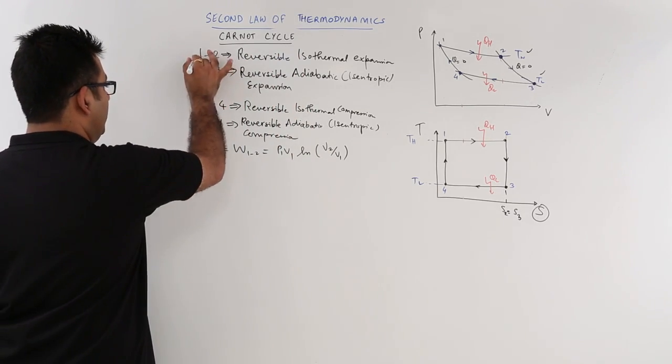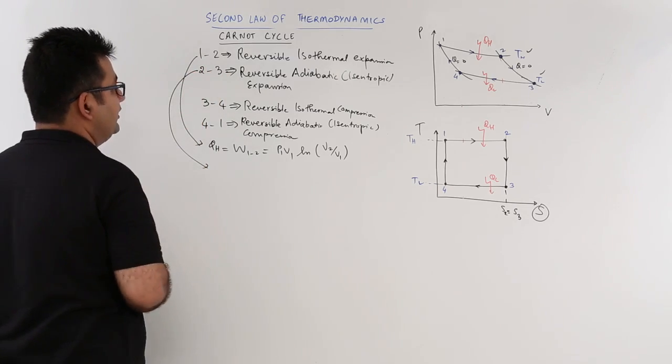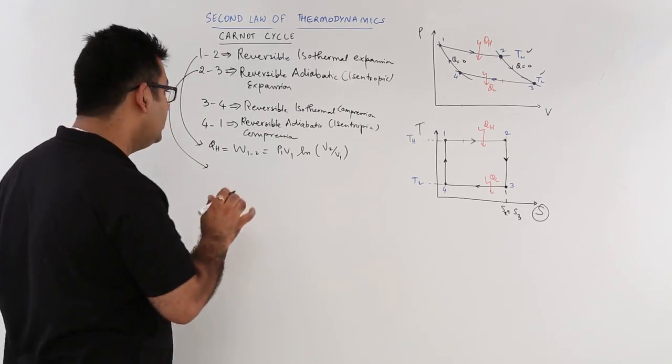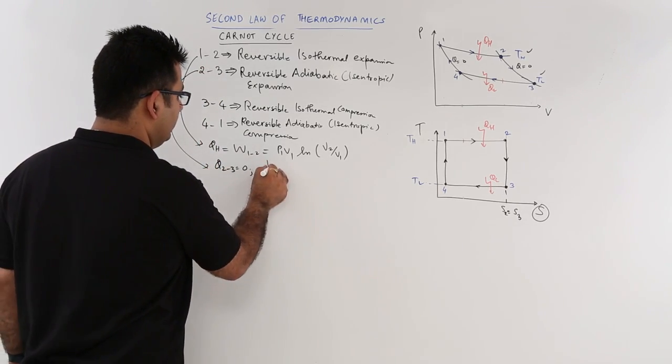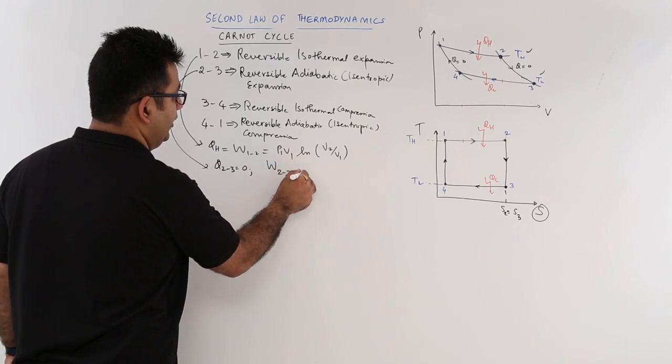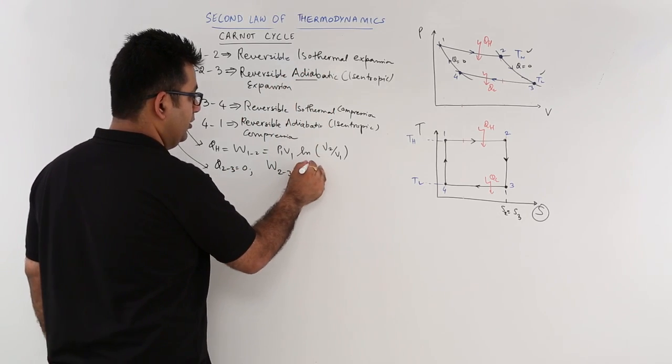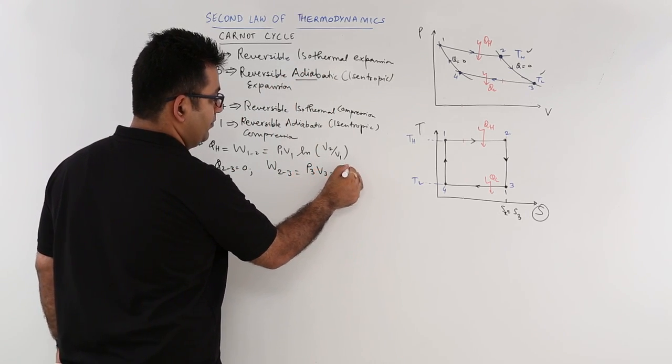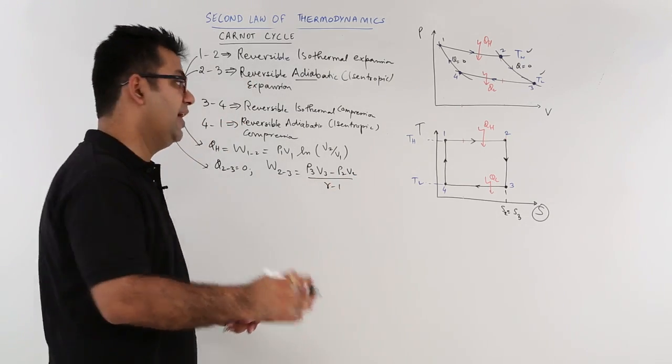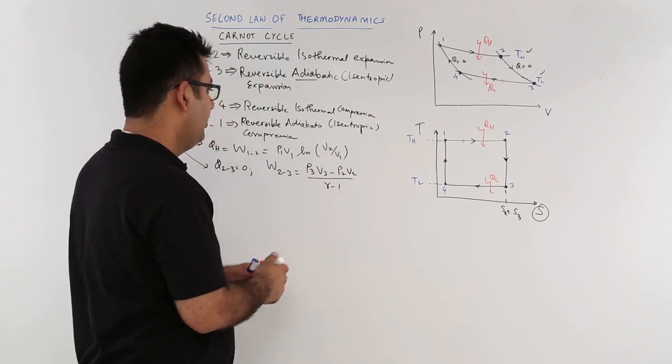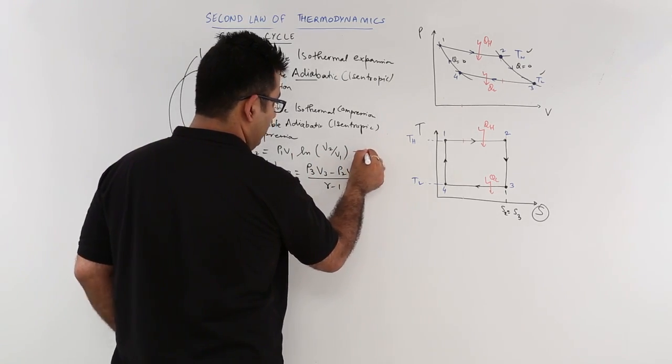Now this is for 1, 2. Let's look at the same thing for 2, 3. Now for 2, 3, Q2,3 is 0. Let's find out the work value. So that is W2,3. Now it is an adiabatic process. For adiabatic, you have P3 V3 minus P2 V2 by gamma minus 1. Assuming we have air as our working fluid. So you can now see that these are similar, or you can say, quite familiar kind of expressions that we are using over here.